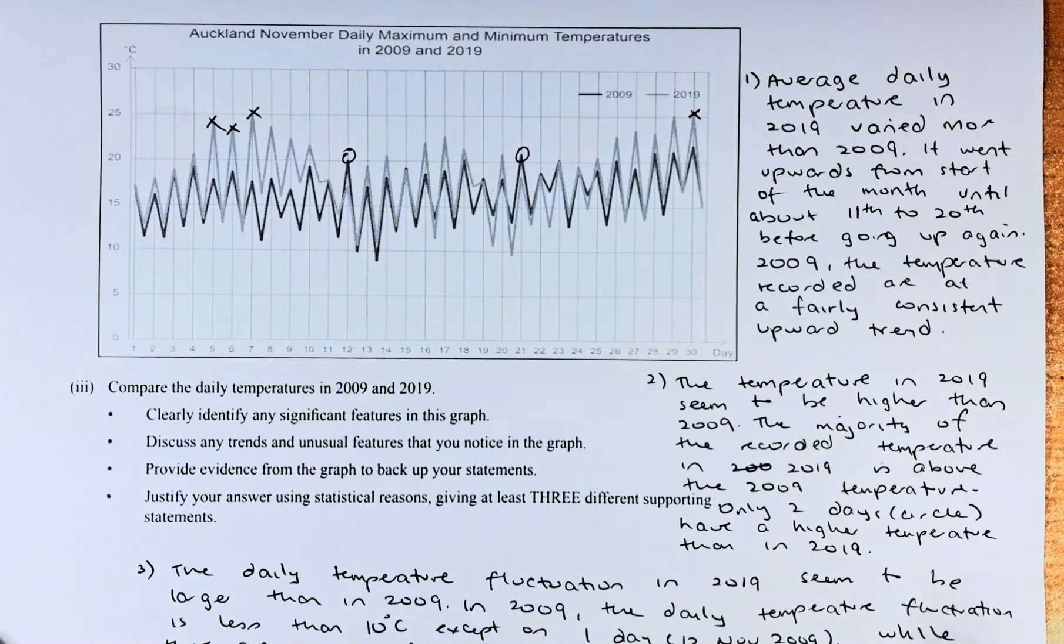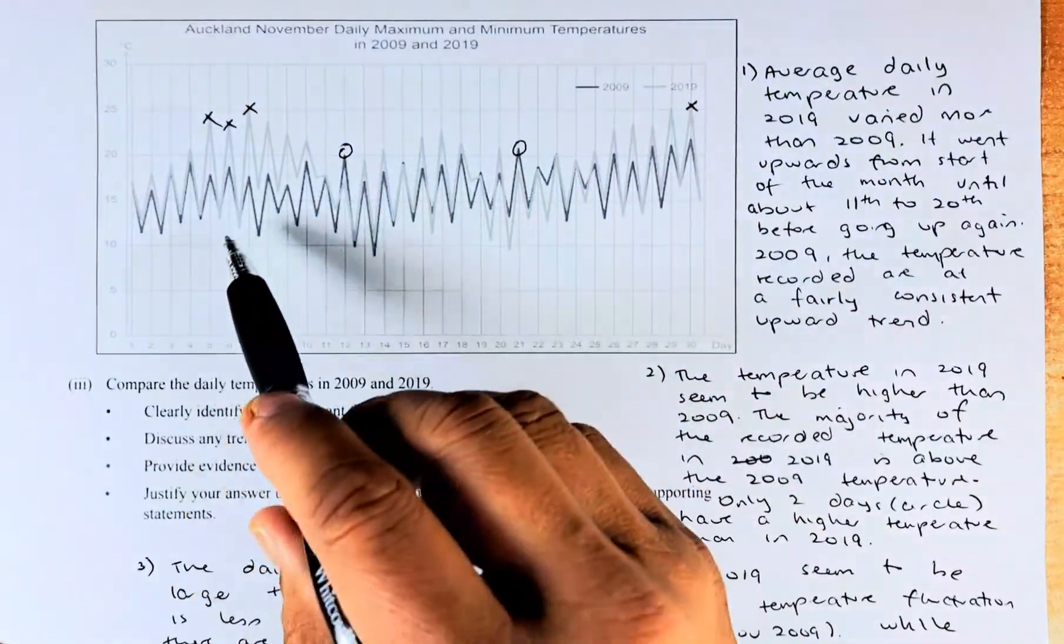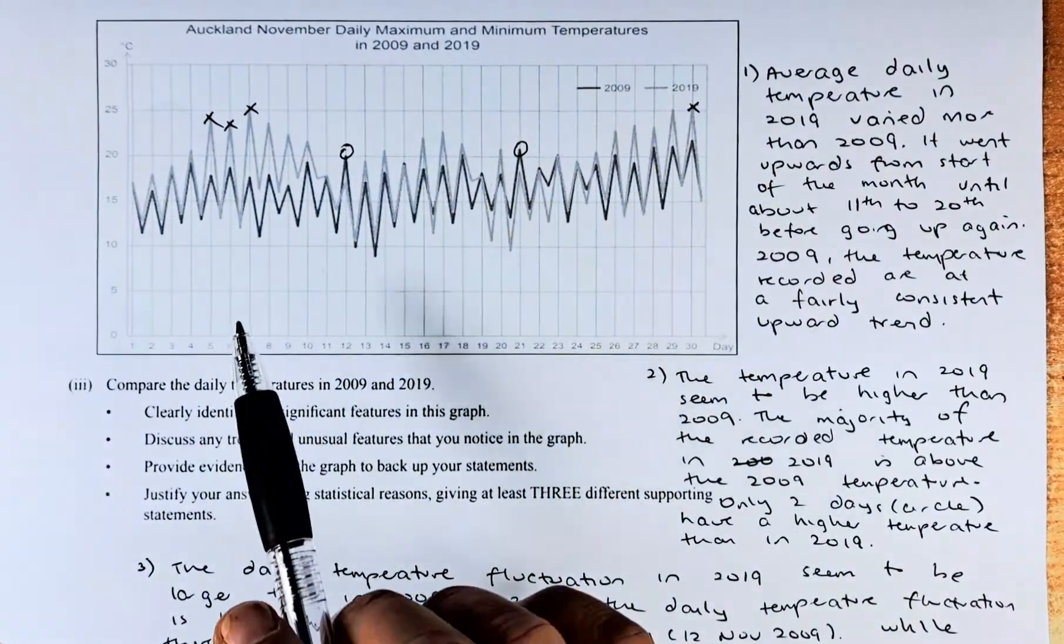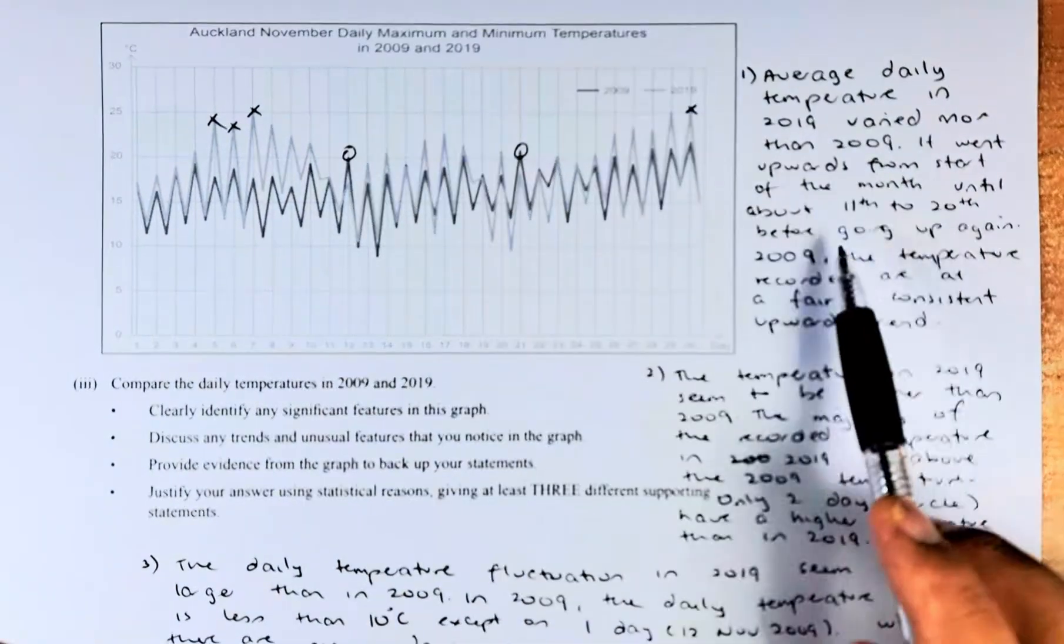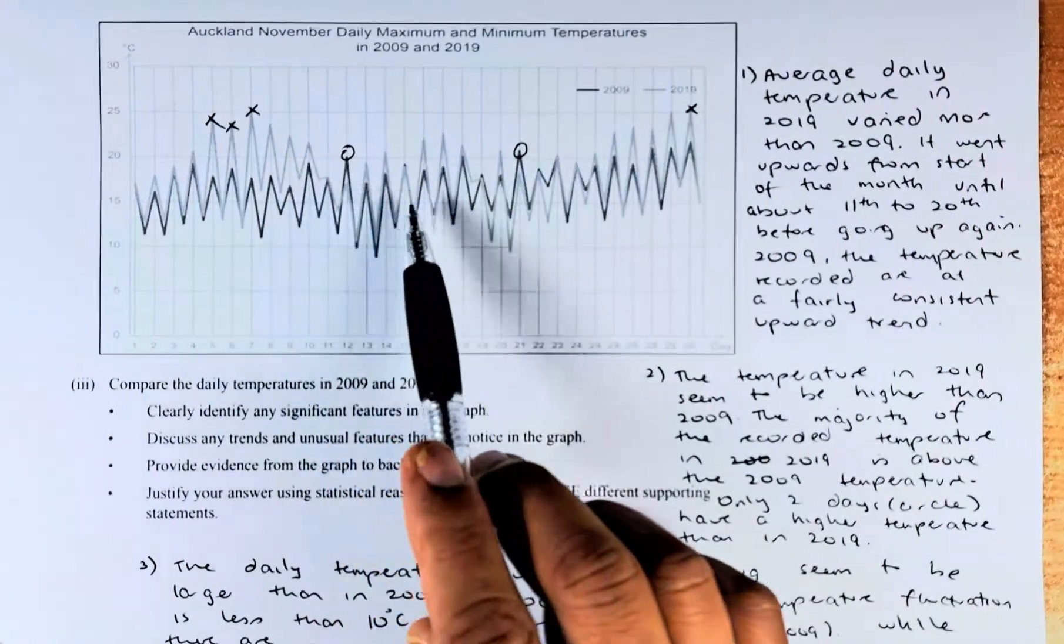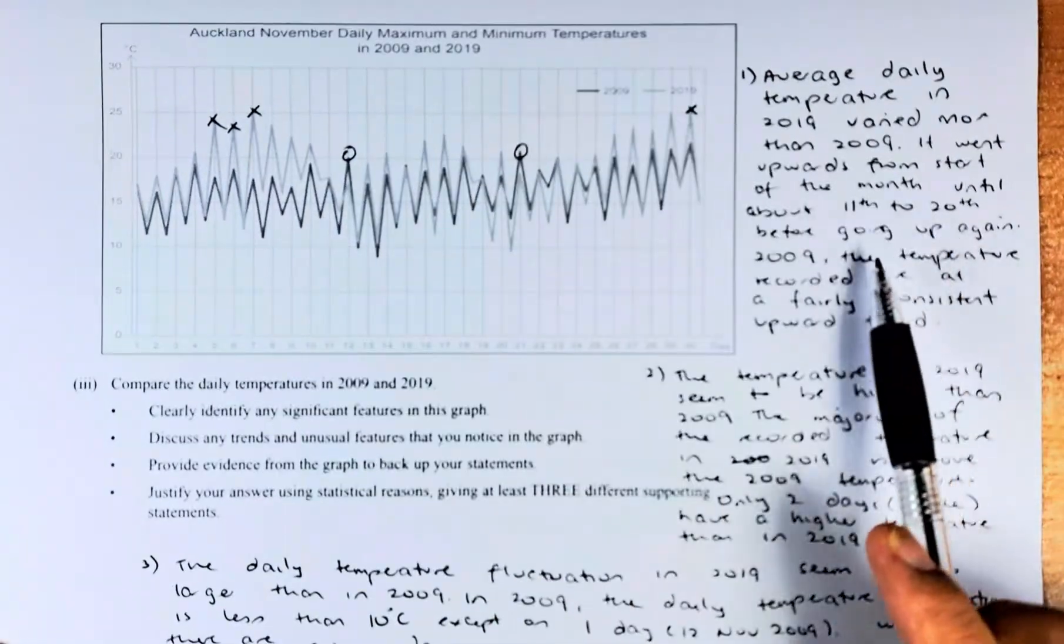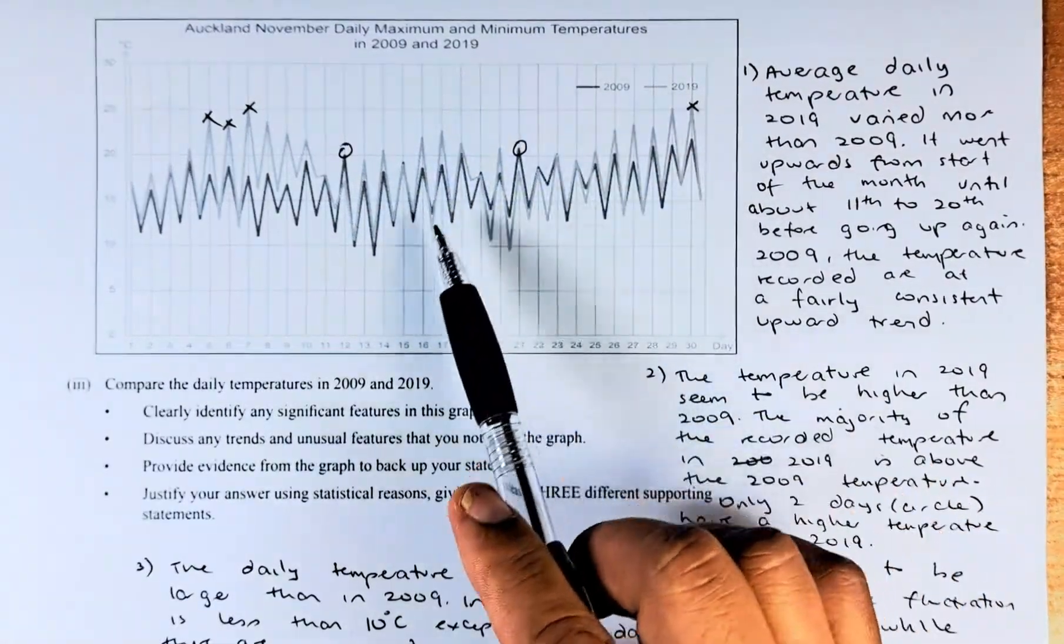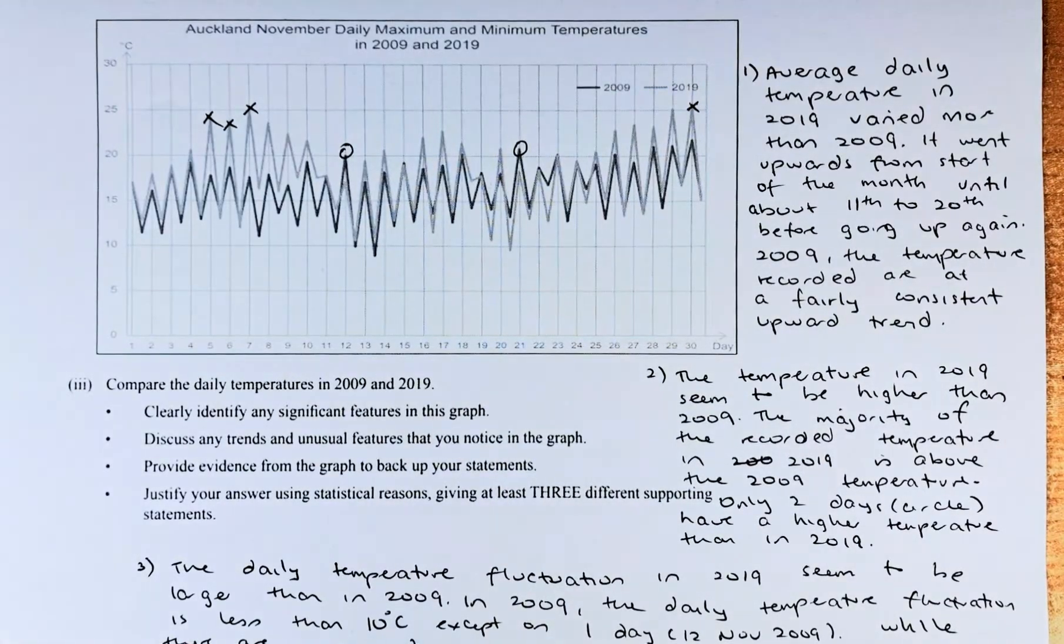Point 1, the average temperature in 2019 varied more than 2009. If you look at the graph, it varies more than the darker line. The darker line is more constant. So it went upward from the start. We're looking at the lighter line. It went up at the start until the 20th. From the 11th to the 20th, from here to here, it remained and then it starts to go up again. So the temperature in 2009, which is the darker line, is fairly constant at the upward trend. So that will give you one valid answer.